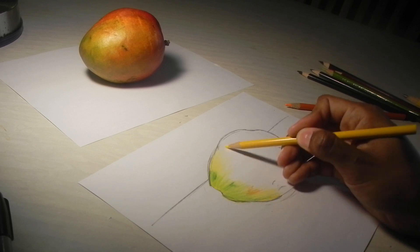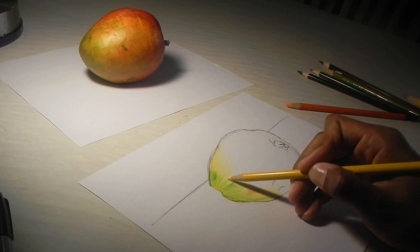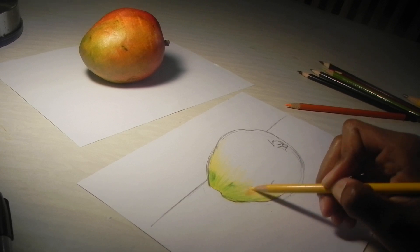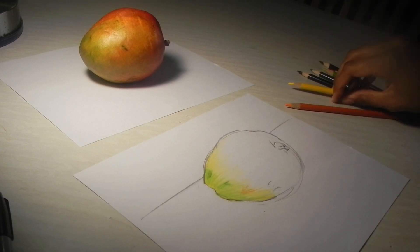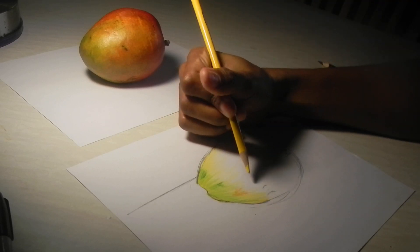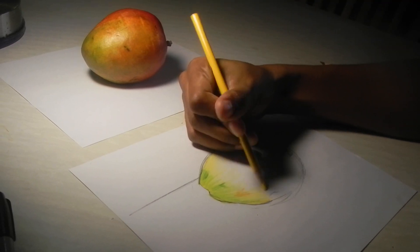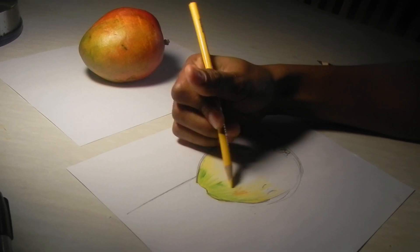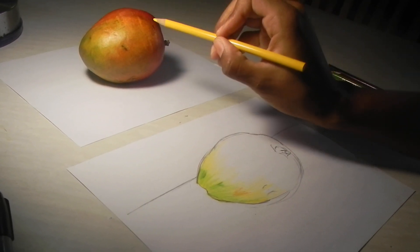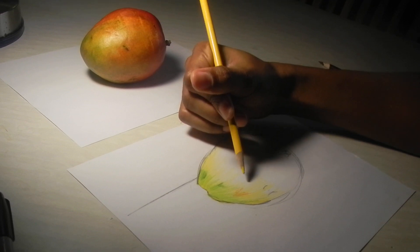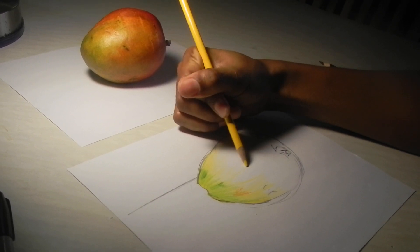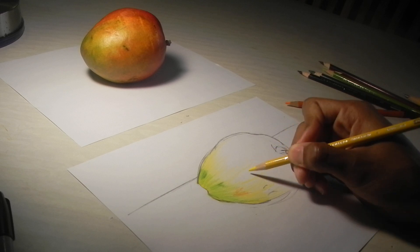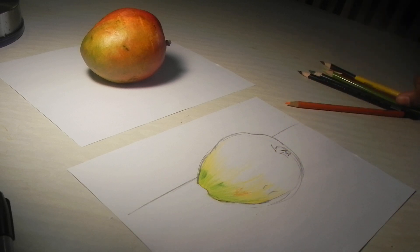So I'm just gradually building on the color. I have a big light value right there, which is about right here. So I'm going to keep that in mind. I'm going to sort of mark it out a little bit, just a little bit, so that I know to leave that area white.